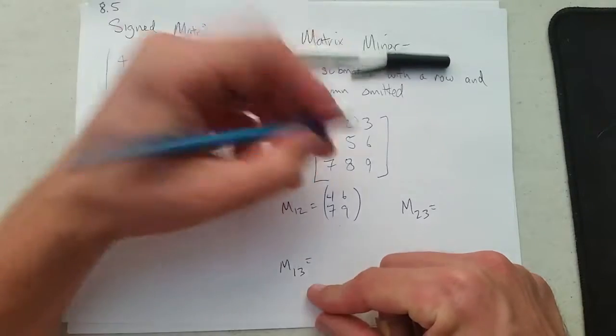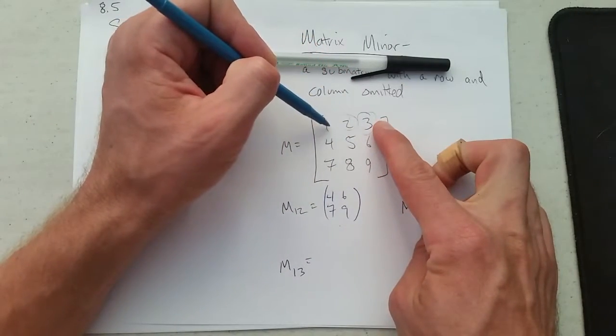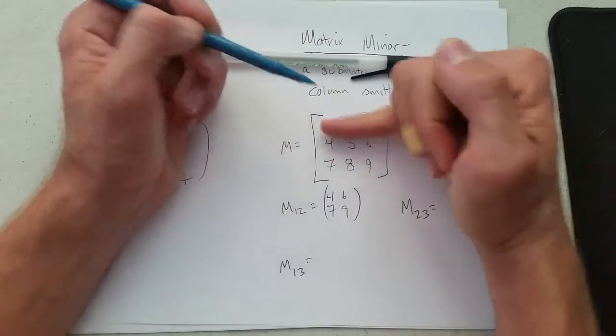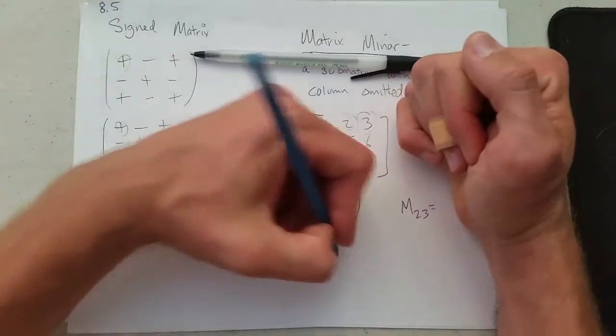Now if we want M1,3, that will be at the 3 right here, row 1, column 3. So we cover up row 1, cover up column 3, and we get 4, 5, 7, 8.